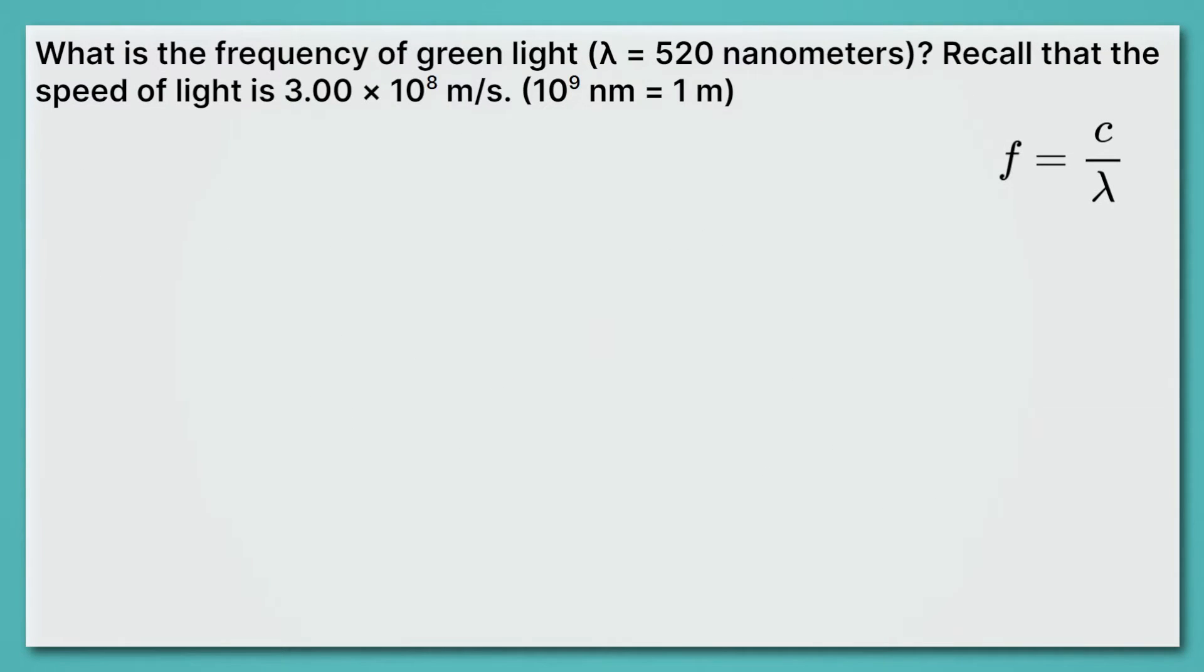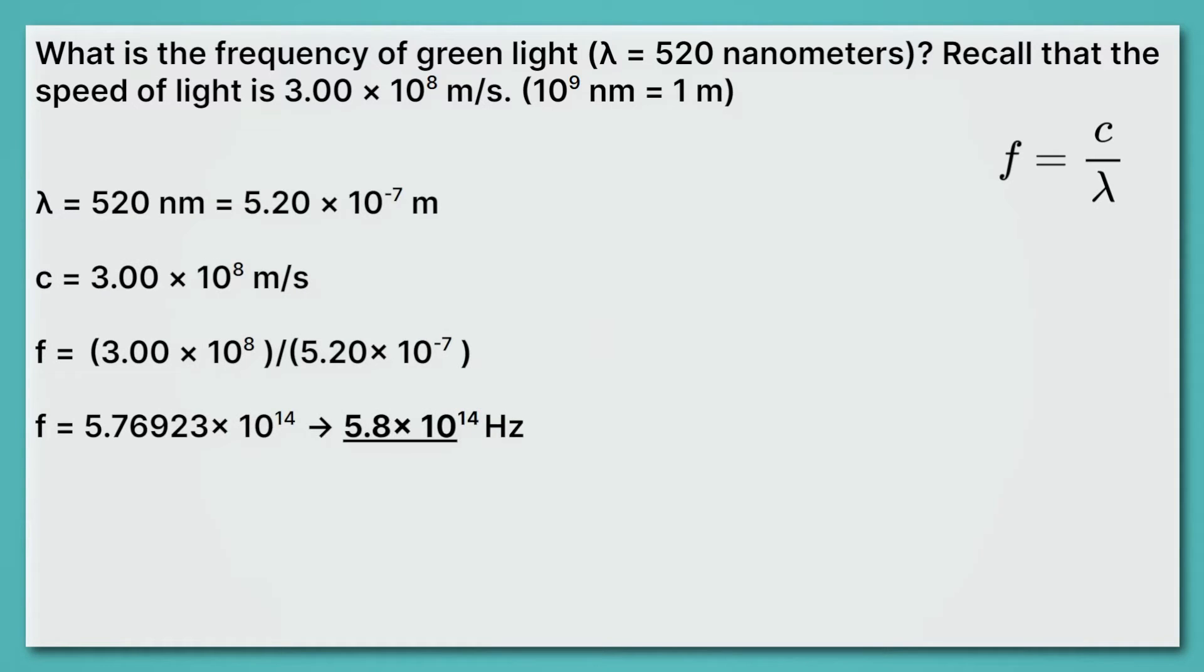Alright, now it's your turn. This question says, what is the frequency of green light with a wavelength of 520 nanometers? Recall that the speed of light is 3.00 times 10 to the 8th meters per second. Pause the video and give this a try. Okay, well you should have gotten 5.8 times 10 to the 14th hertz, a really high frequency.